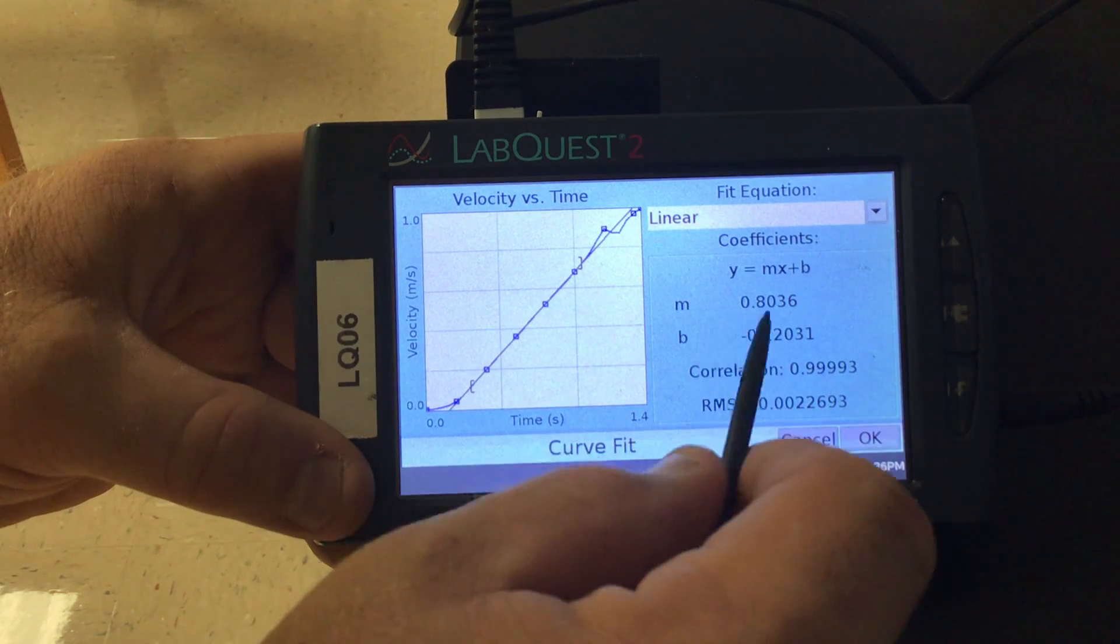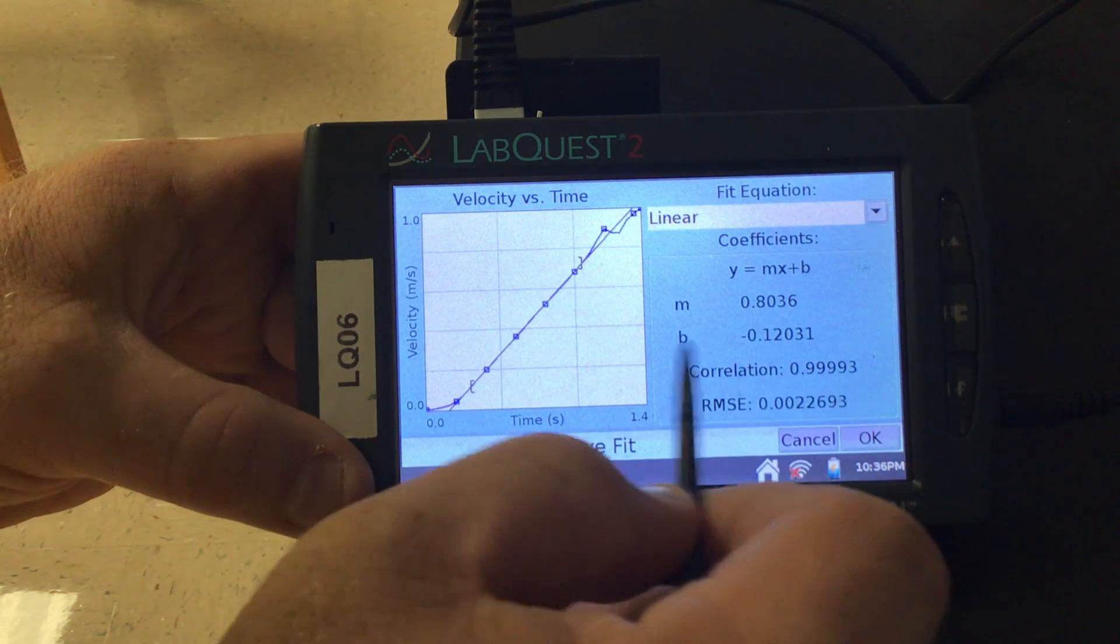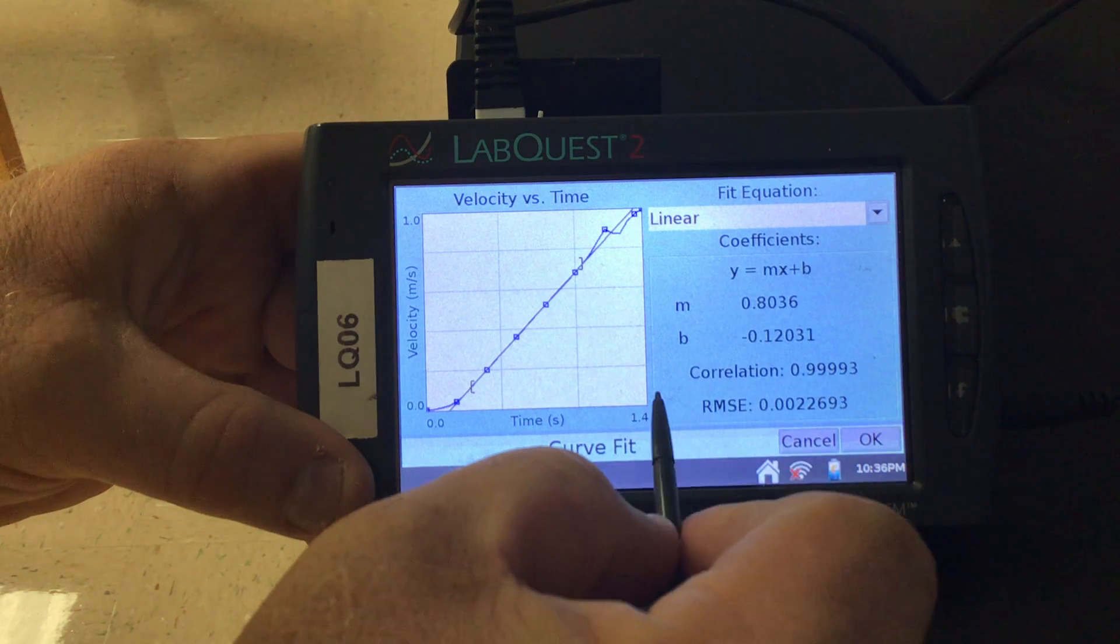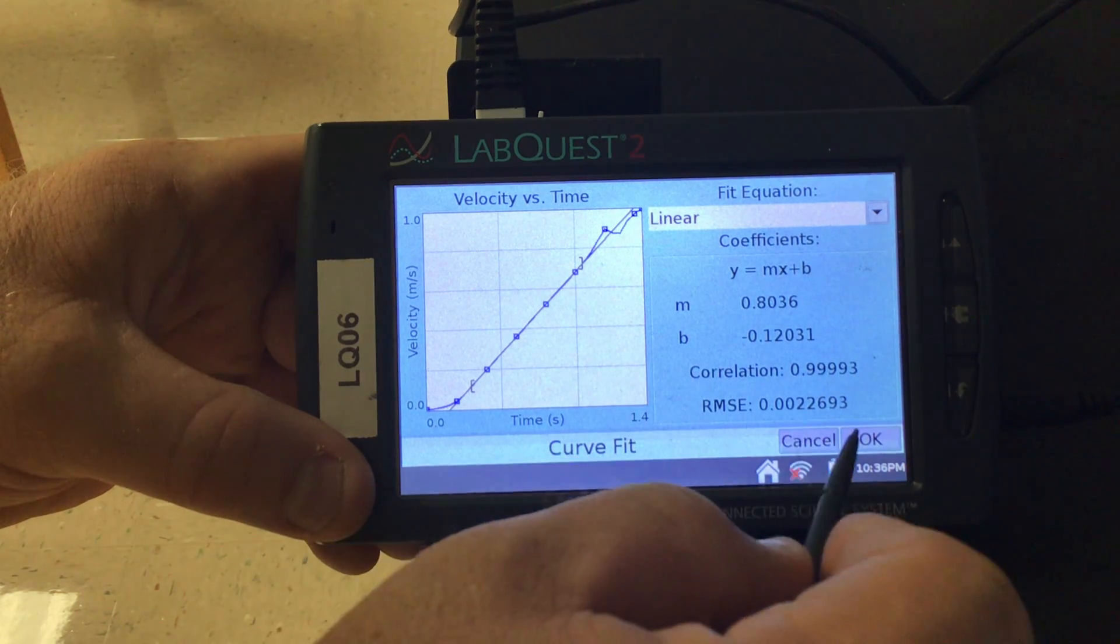So my m, my b, my correlation, which is awesome. So here I can get the slope of my line, which might be useful information for me also.